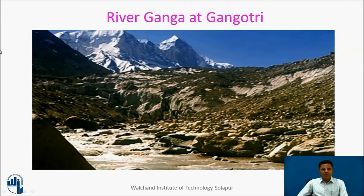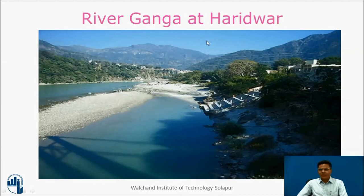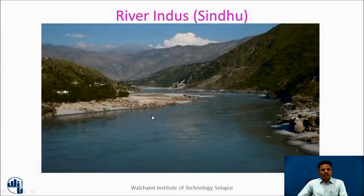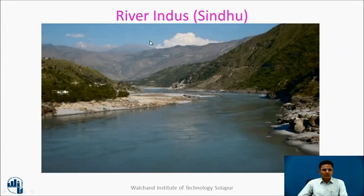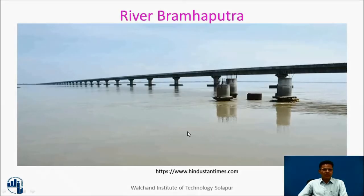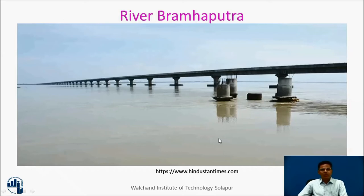River Ganga originates at Gangotri — this is a photograph of Gangotri. This is river Ganga at Haridwar when it comes to the foothills, and this is river Ganga at Varanasi. Notice the increase in discharge as we move to the downstream part of the river. This is river Indus, also called Sindhu; the Indus waters are divided between India and Pakistan. This is river Yamuna. This is river Brahmaputra — notice the discharge and the width of this particular channel, several kilometers wide, say 3 kilometers or even more when floods occur. This gives you an idea about the quantum of water flowing through river Brahmaputra.